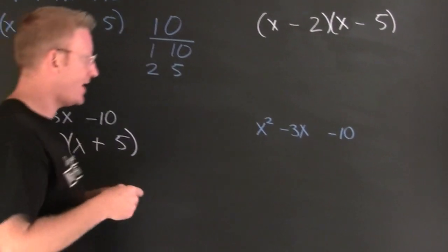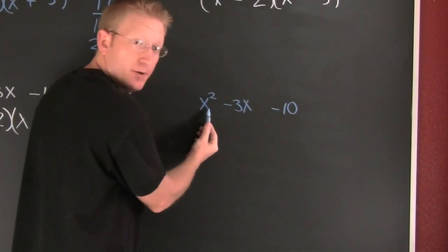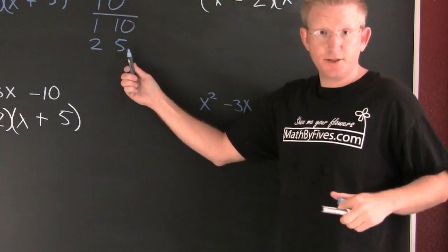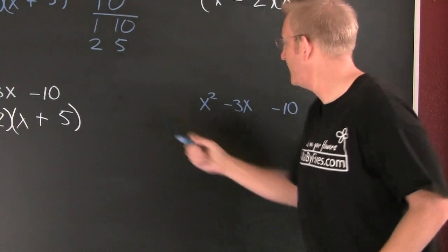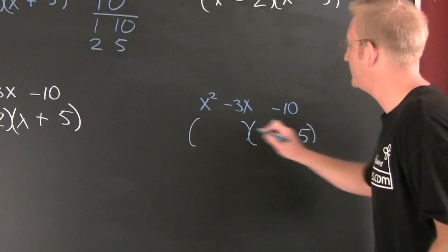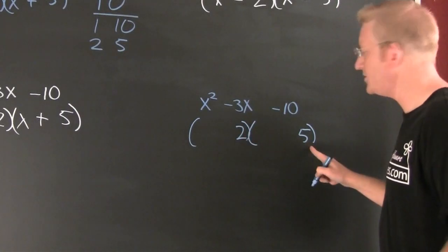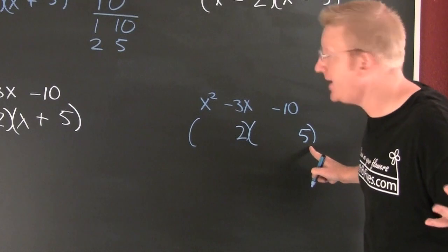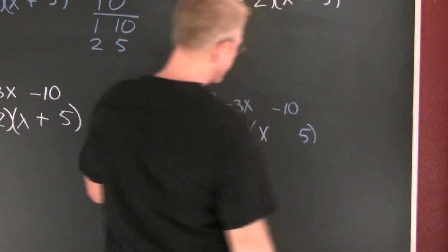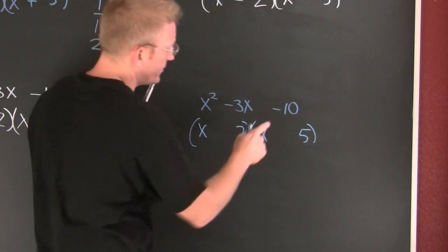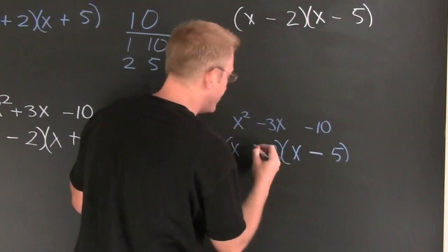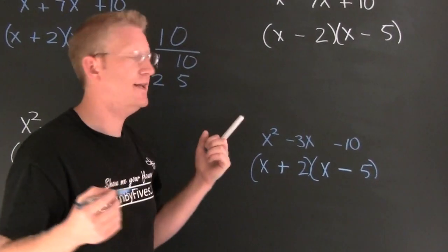Now over here, I'm looking for the factors of 10 that subtract to be 3. Yes — 2 and 5. I could put the 5 there and the 2 there, and we'll iron all that out when we assign the signs. I put my X here and my X there. Here's how the story goes: the signs are different and the big one is negative. Negative, positive.